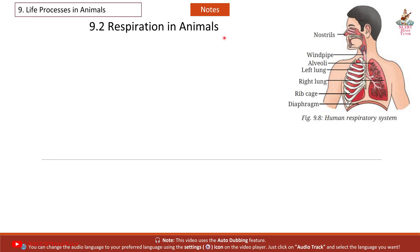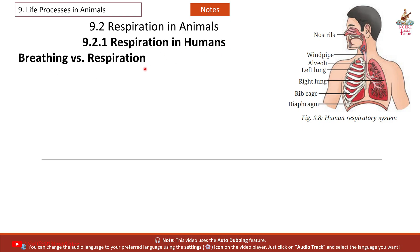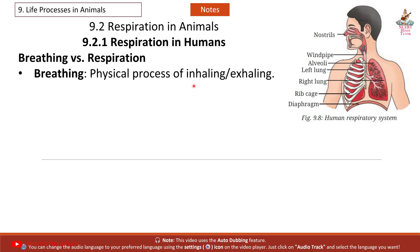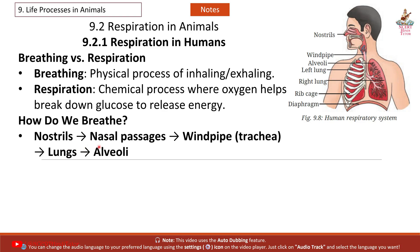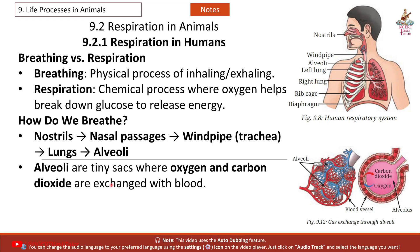Section 9.2: Respiration in Animals. Breathing is the physical process of inhaling and exhaling, while respiration is the chemical process where oxygen helps break down glucose to release energy. The pathway of air: nostrils → nasal passages → windpipe (trachea) → lungs → alveoli. Alveoli are tiny sacs where oxygen and carbon dioxide are exchanged with blood.